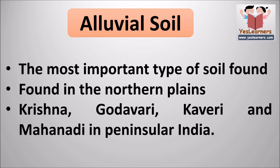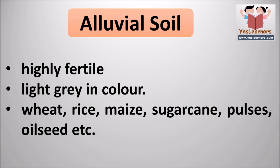Alluvial soil is the most important type of soil found in India. It covers about 40% of the total land. It is found in the northern plains beginning from Punjab to West Bengal and Assam. It is also found in the deltas of different rivers such as Krishna, Godavari, Kaveri and Mahanadi in Peninsular India. Alluvial soil is highly fertile and is light gray in color.